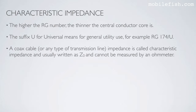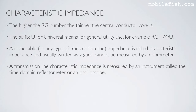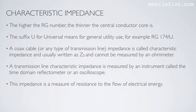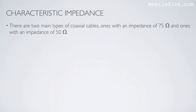A coax cable, or any type of transmission line, has an impedance called characteristic impedance, usually written as Z0, and cannot be measured by an ohmmeter. A transmission line characteristic impedance is measured by an instrument called the time domain reflectometer or an oscilloscope. This impedance is a measure of resistance to the flow of electrical energy. There are two main types of coaxial cables: one with an impedance of 75 ohms and one with an impedance of 50 ohms.